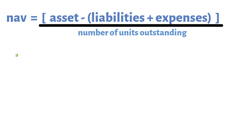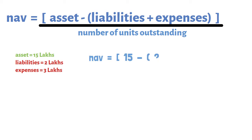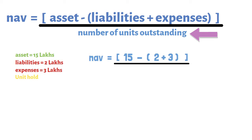I will explain with an example. If an organization holds assets of 15 lakhs, liabilities of 2 lakhs, and expenses of around 3 lakhs, then putting these into the formula we get: 15 lakhs minus 2 lakhs plus 3 lakhs, which gives 10 lakhs. The number of units outstanding is nothing but the number of unit holders. Say for example if the unit holders stood at 1 lakh, then the formula gives: 15 lakhs minus 2 lakhs plus 3 lakhs, divided by 1 lakh — we get the value as 10.